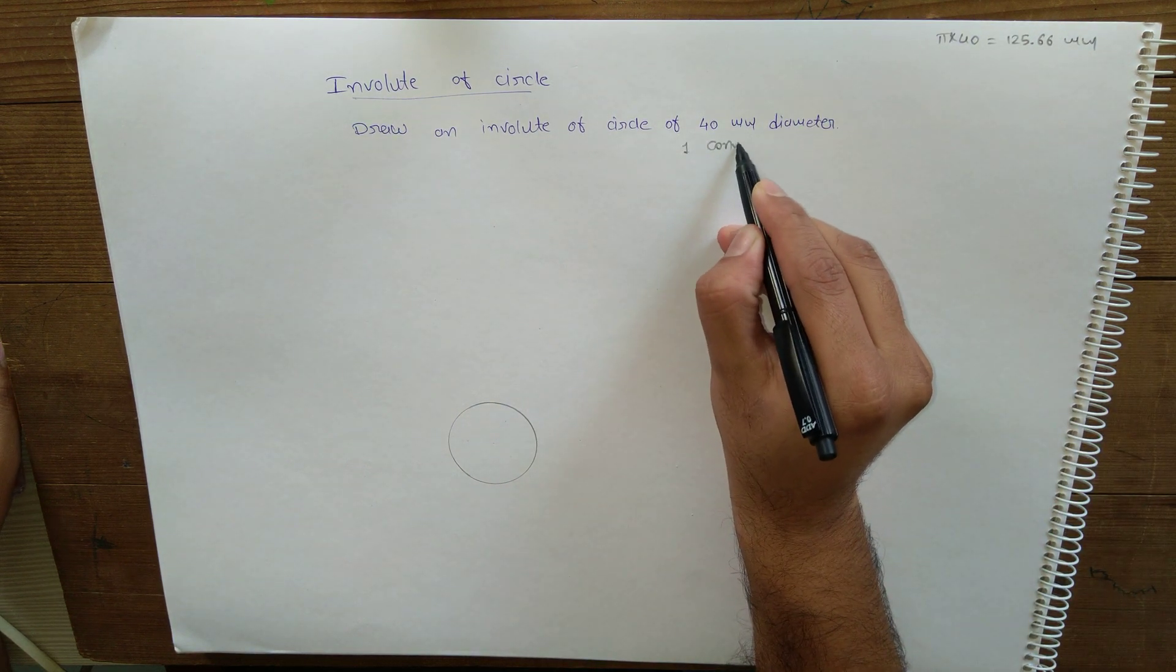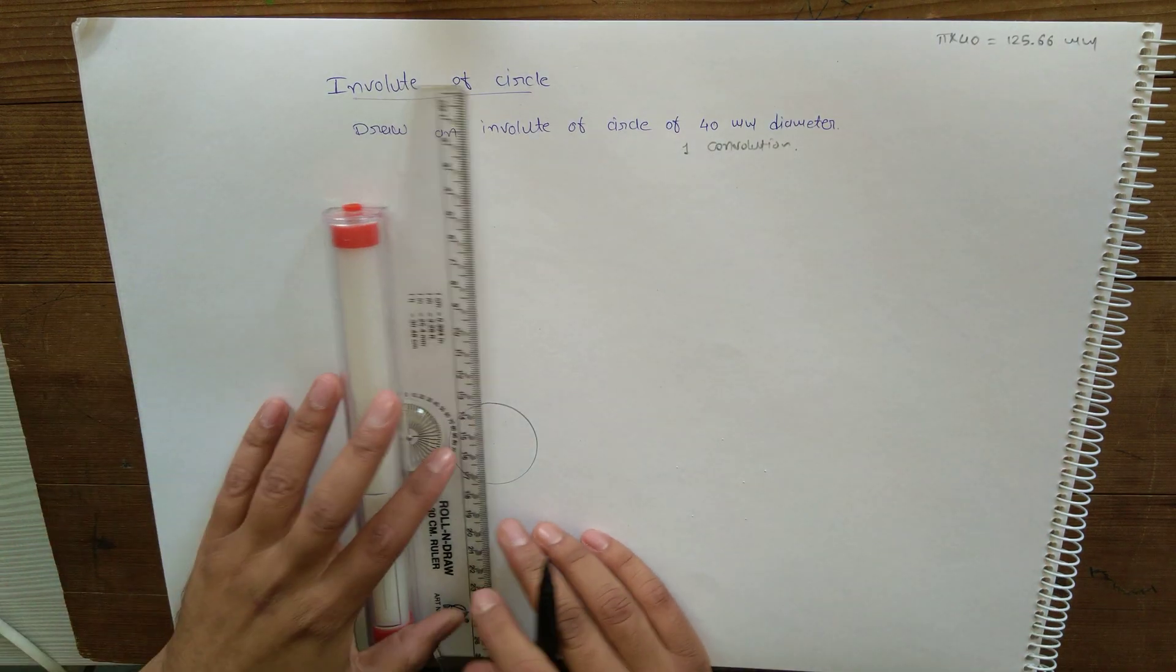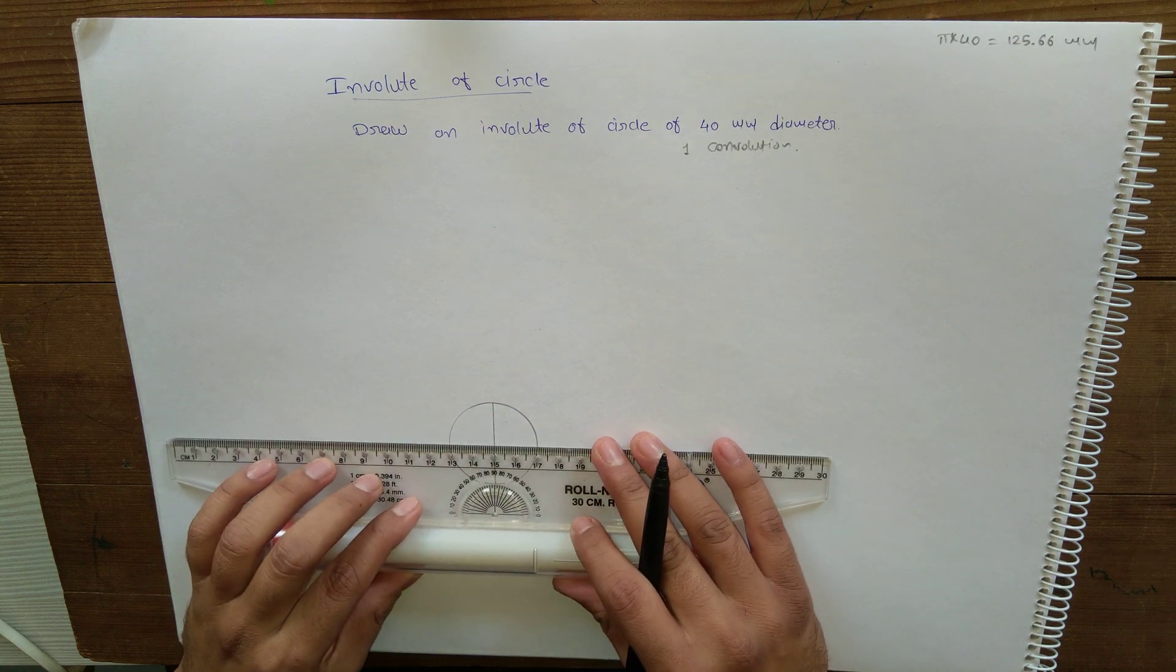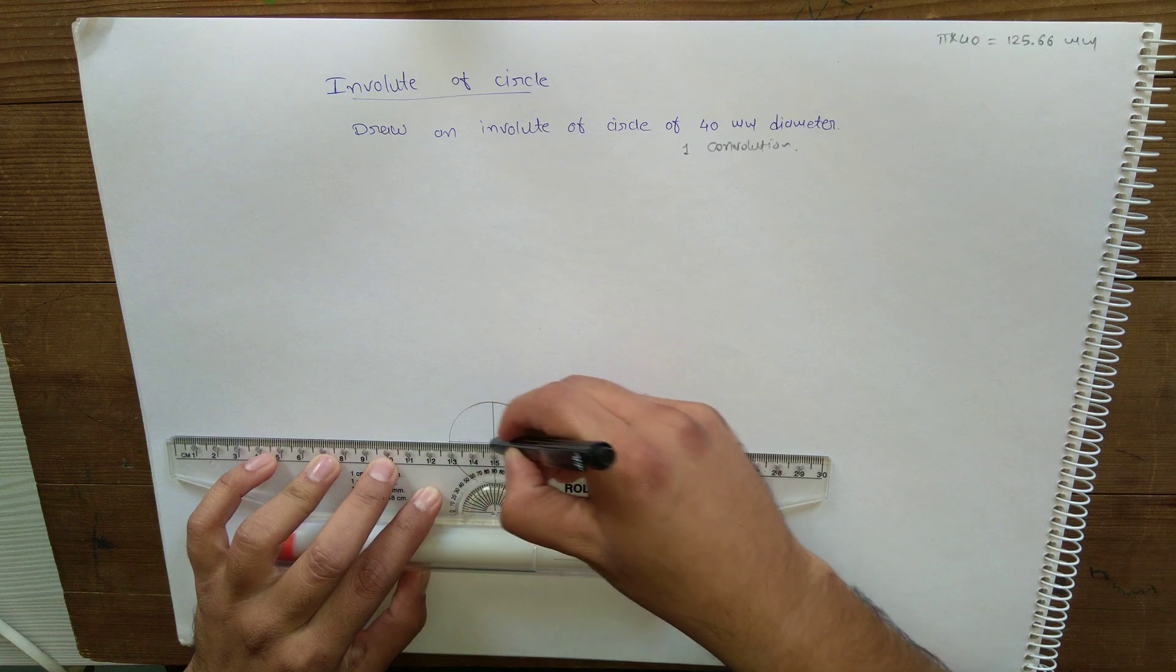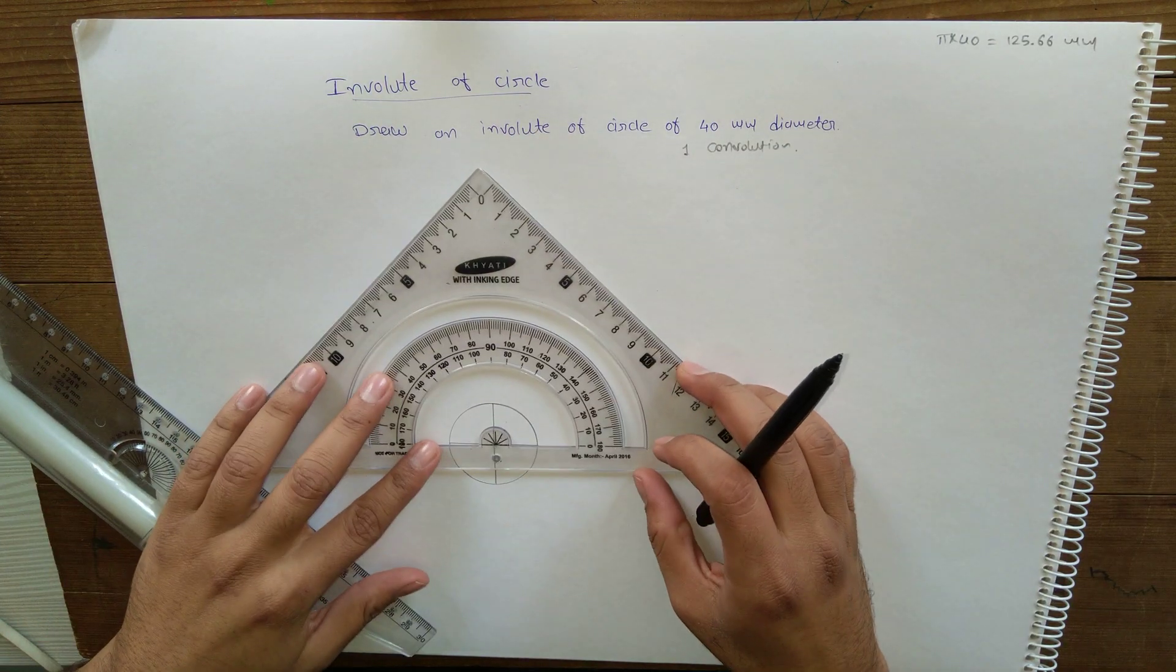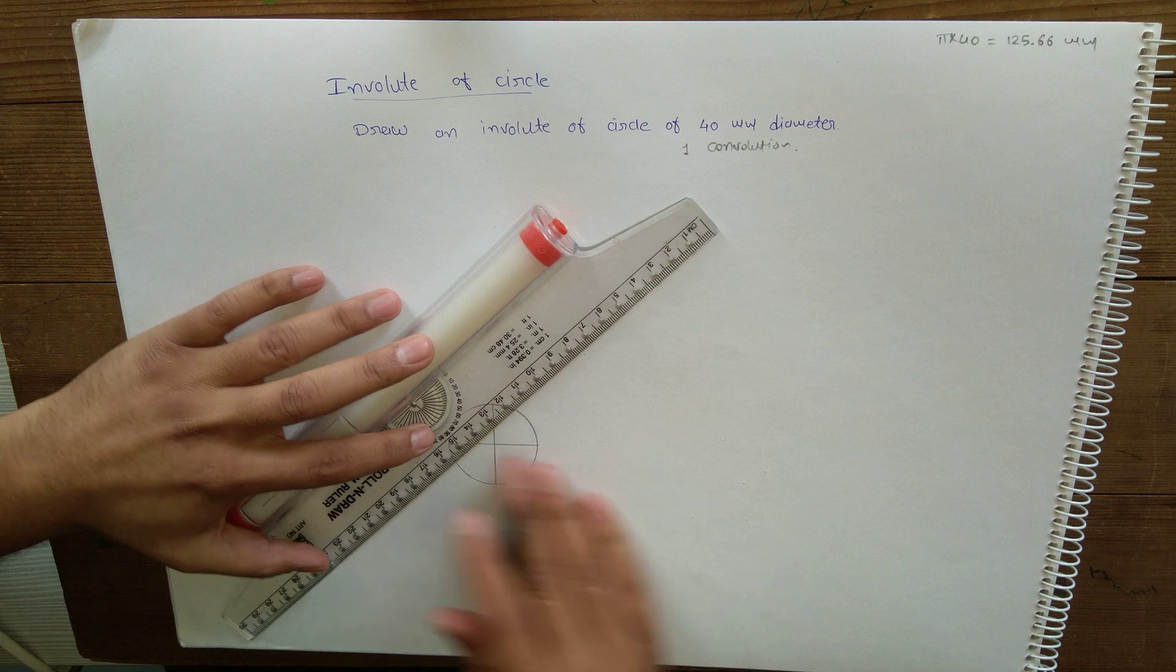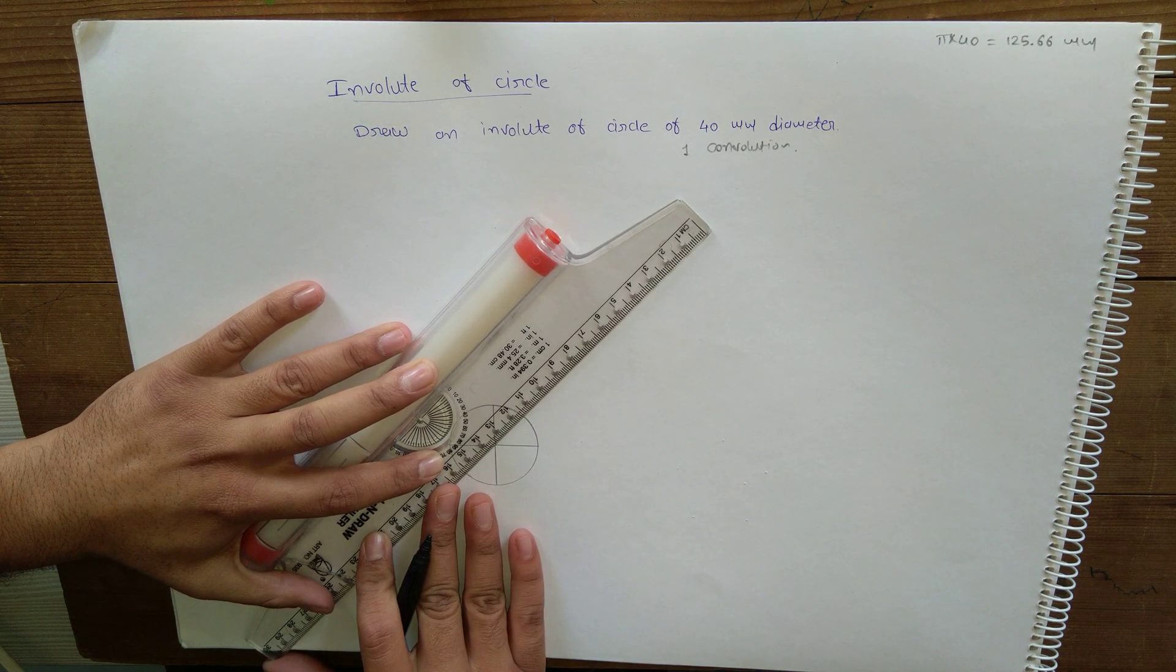For one convolution, length of imaginary string will be equal to π into diameter of the circle, that is π into 40, so 125.66mm. Now divide this circle into eight equal parts. So here we have divided this into eight equal parts.